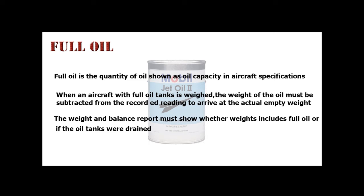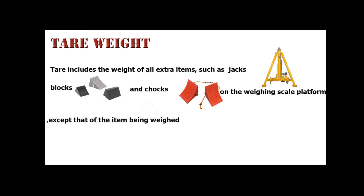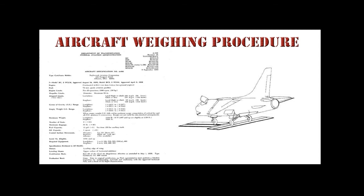Full Oil: Full oil is the quantity of oil shown as oil capacity in the aircraft specifications. When an aircraft with full oil tanks is weighed, the weight of the oil must be subtracted from the recorded reading to arrive at the actual empty weight. The weight and balance report must show whether it includes full oil or if the oil tanks were drained. Tare Weight includes the weight of extra items such as jacks, blocks, and chocks on the weighing scale platform, except the item being weighed.